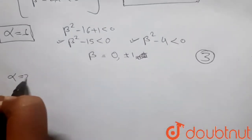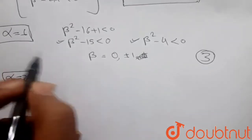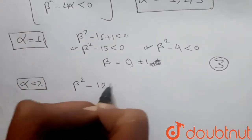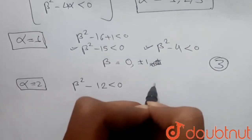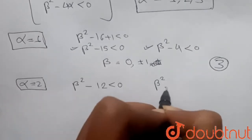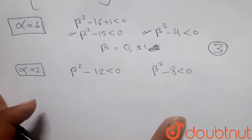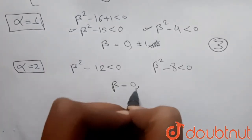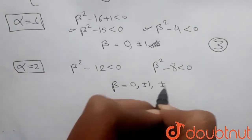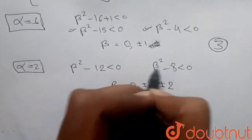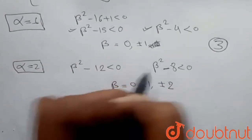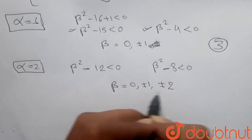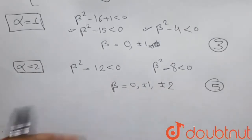If α = 2, then the circle condition becomes β² - 12 < 0 and the parabola condition becomes β² - 8 < 0. β² must be less than 8 as well as less than 12, so β can be 0, ±1, and ±2. So for α = 2, we get five values of β.